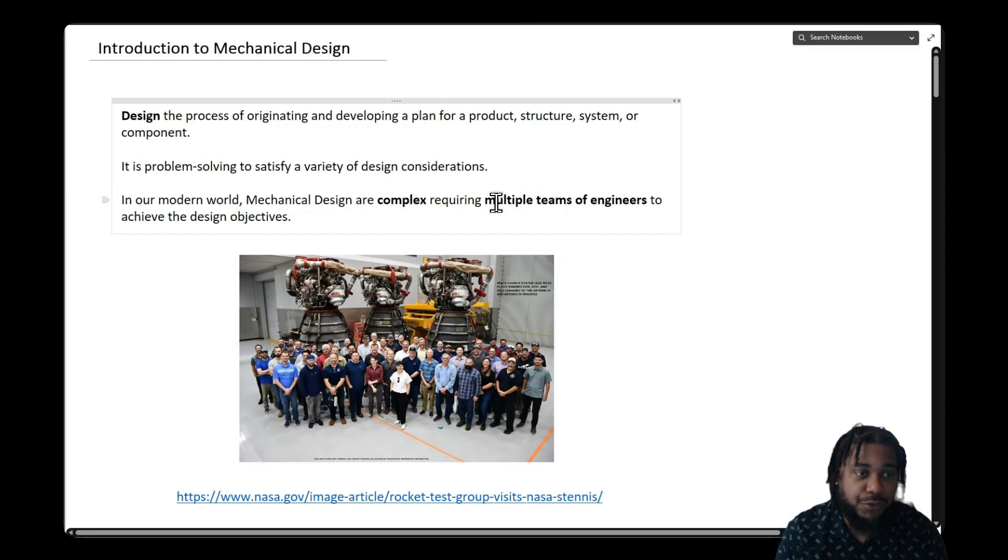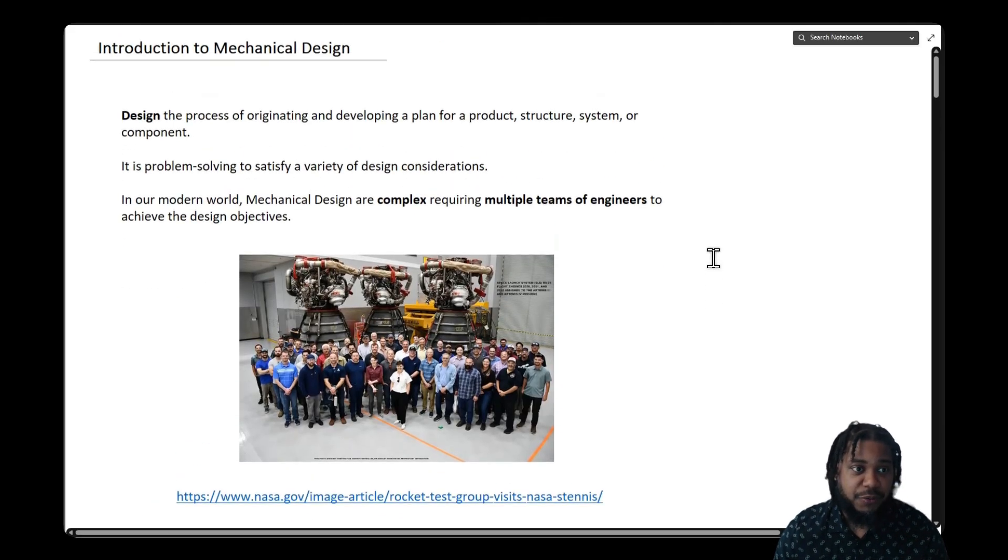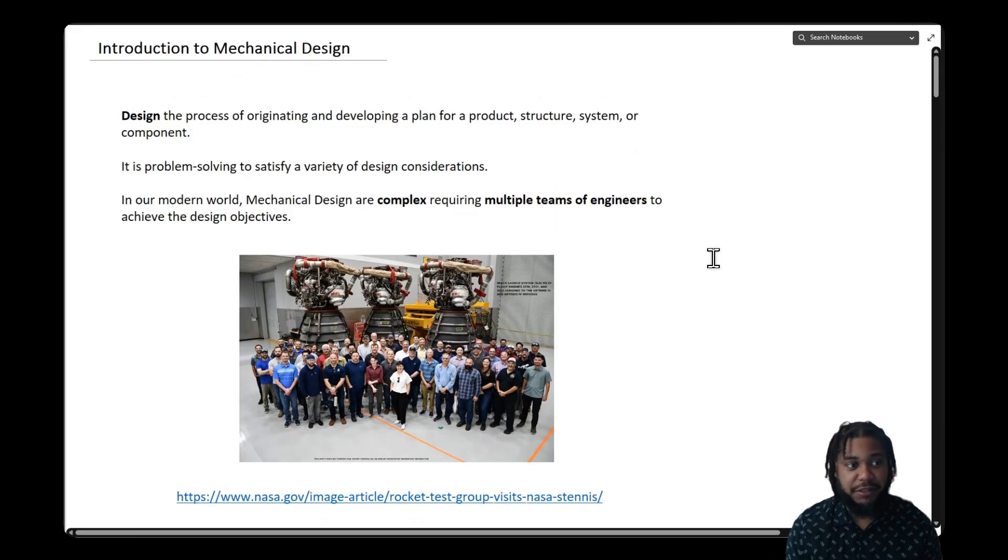Today we're going to go over an introduction to mechanical design. Design is the process of originating, developing, and planning for a product, structure, system, or component. It's a problem-solving endeavor where we must satisfy a variety of design constraints.